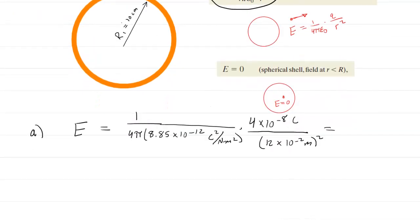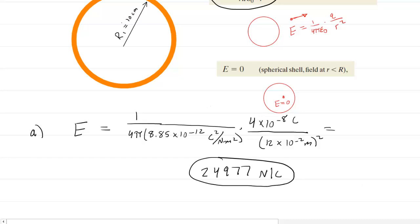When you punch that into your calculator, you should end up with approximately 24,977, and then the field unit will be in newtons per coulomb. So this would be the correct answer to part A.